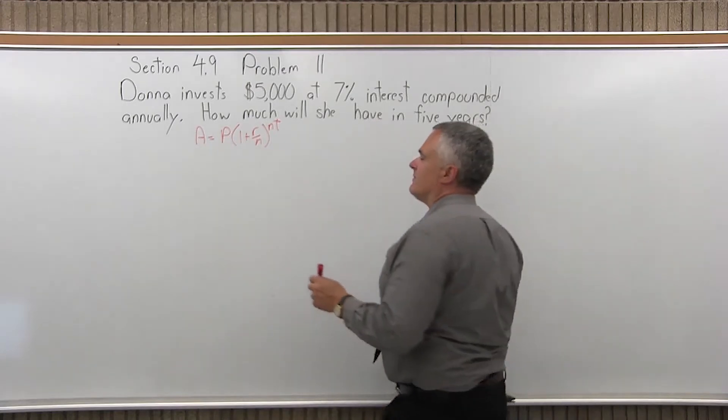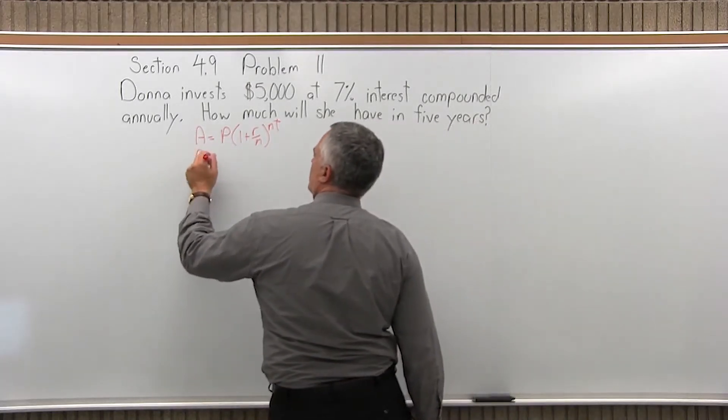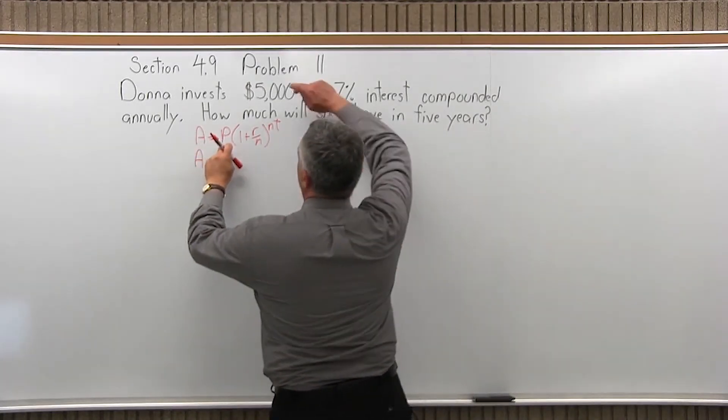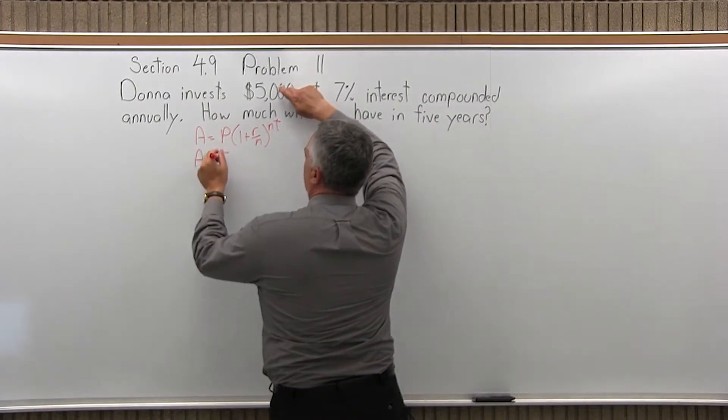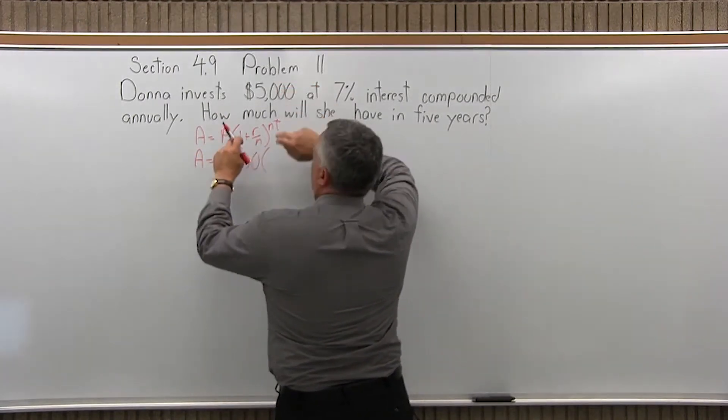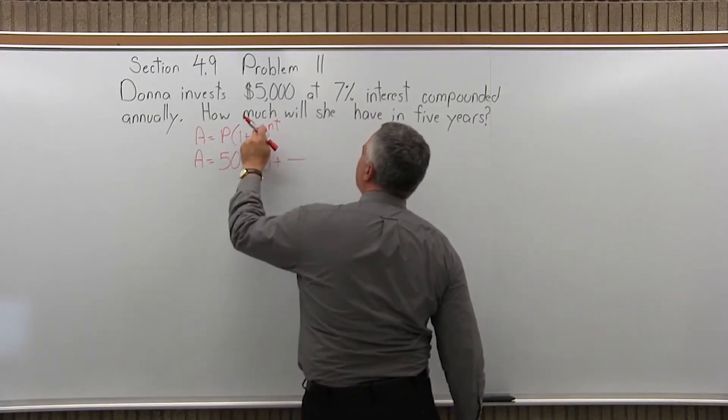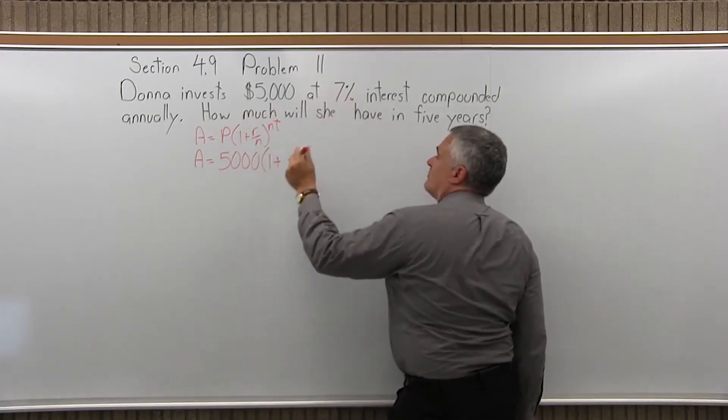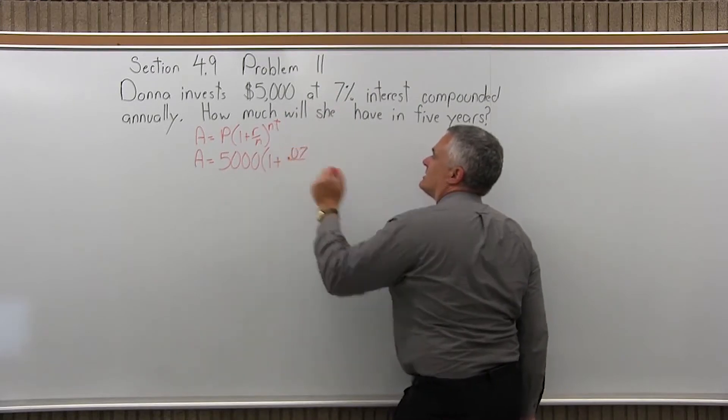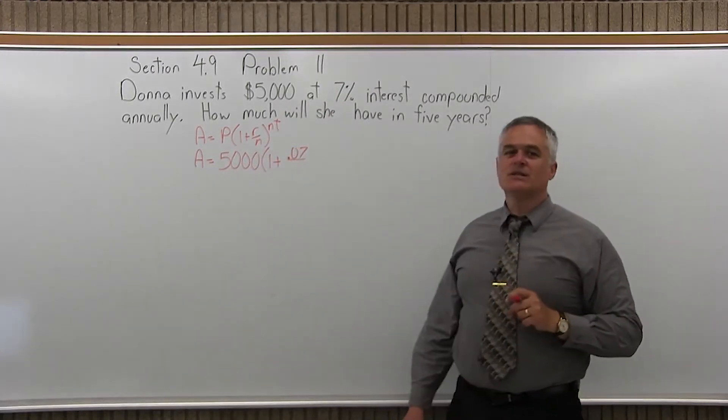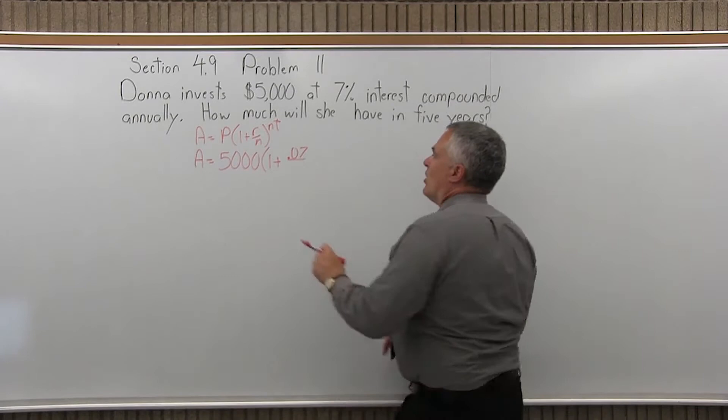So we fill that in. A is the final amount, which I want to know. P is the principal or initial investment, that is $5,000. Open the parentheses, 1 plus R, the rate, as a decimal. So 7% as a decimal must go in as a decimal, 7% is 0.07.